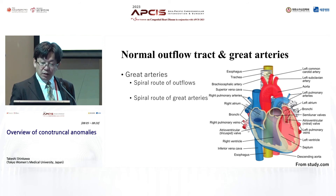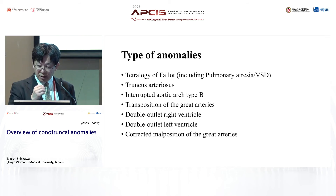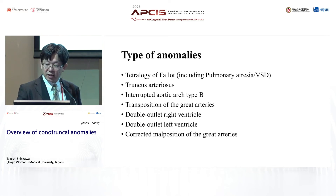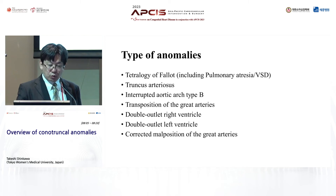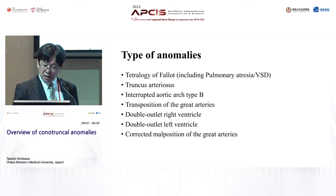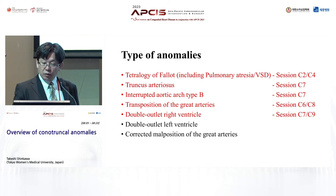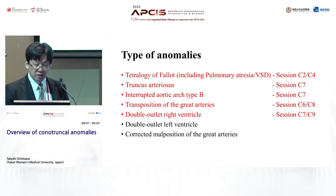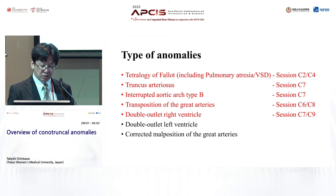This is normal anatomy. So let's see what types of congenital heart disease are identified as conotruncal anomalies. In general we have tetralogy of Fallot including pulmonary atresia with VSD, truncus arteriosus or so-called persistent truncus arteriosus, interrupted aortic arch type B, transposition of the great arteries, and double outlet right ventricle, among others. The anomalies shown in red will have specific lectures later today and tomorrow, so I won't go into great detail.